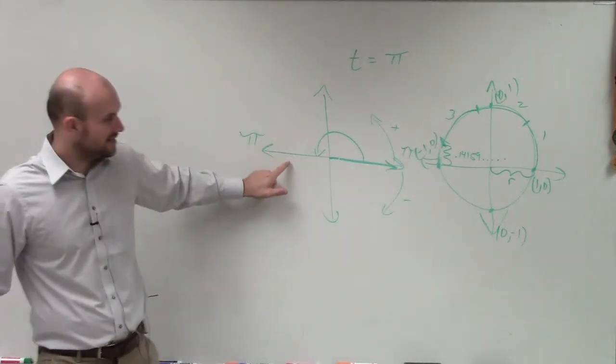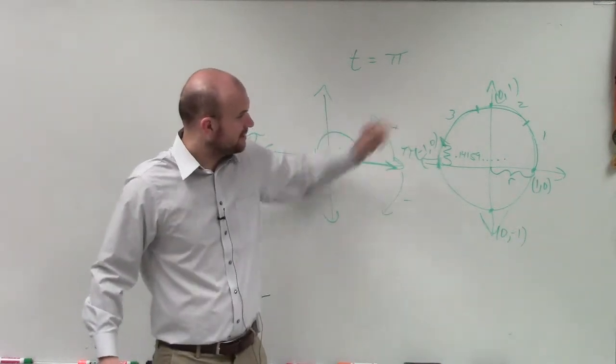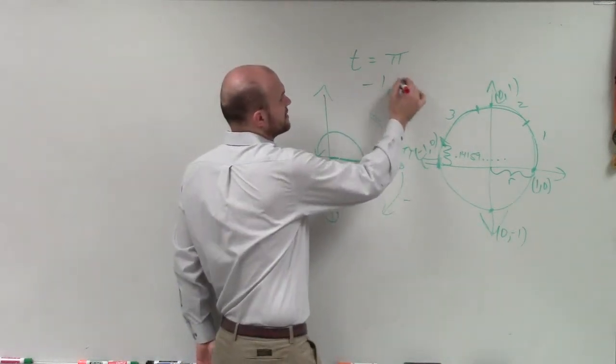So therefore, I just need to determine the point on here. Well, going back to my unit circle, that's the point negative 1, 0.